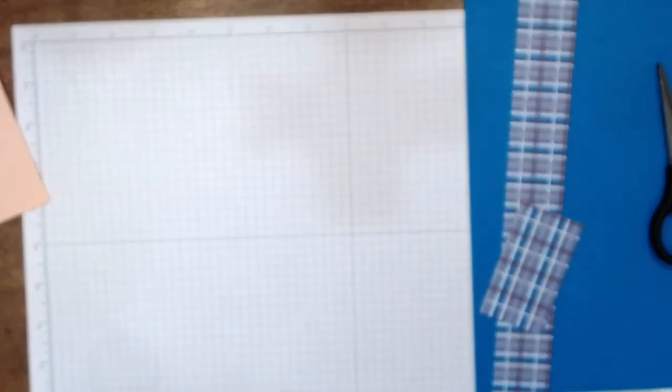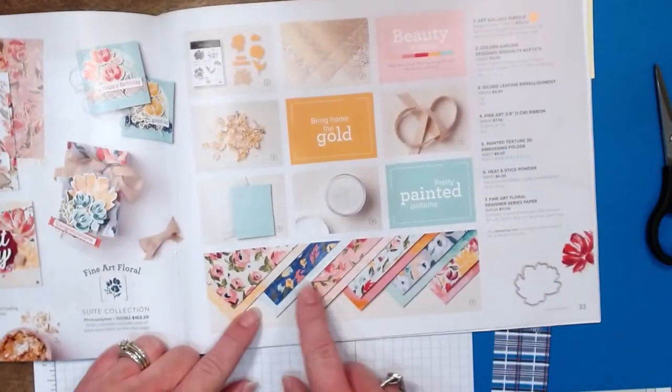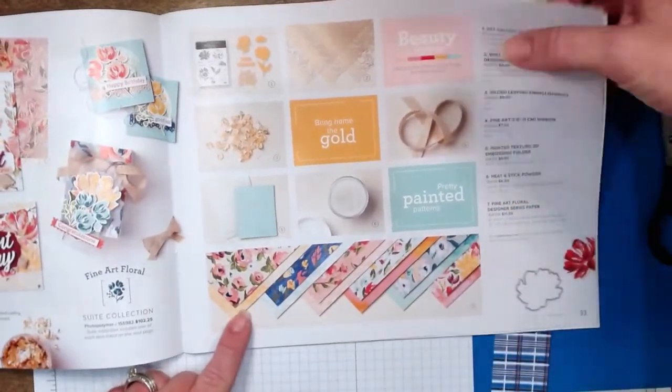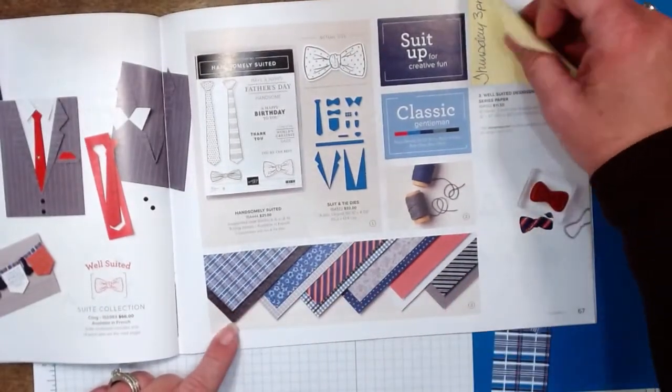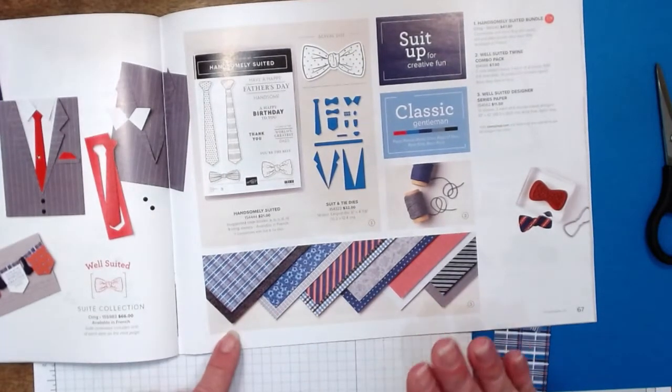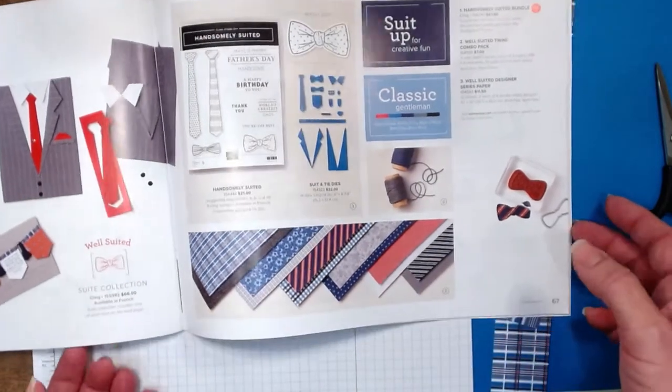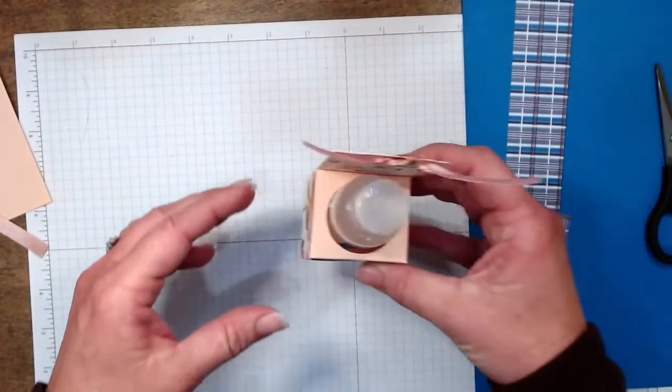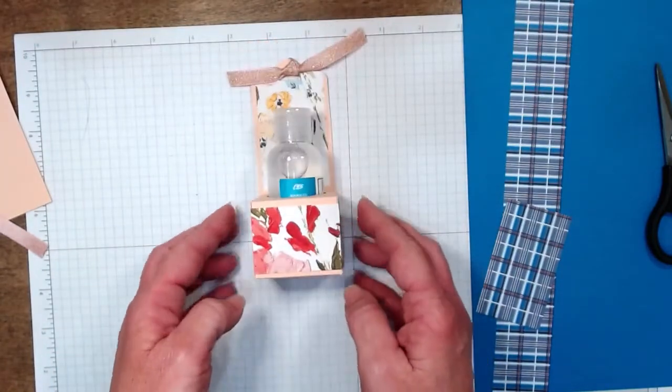Now let me flip you over. So the designer series paper we're going to be using is the art gallery designer series paper. These are for the feminine ones. And then the masculine ones I am using is the well-suited designer series paper. This is it standing up.